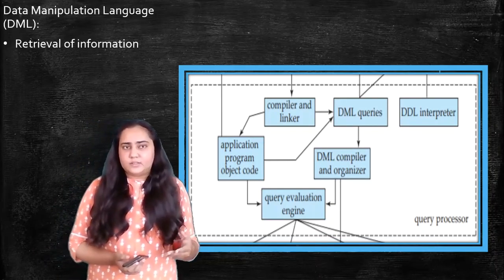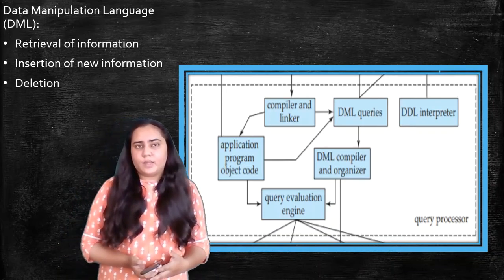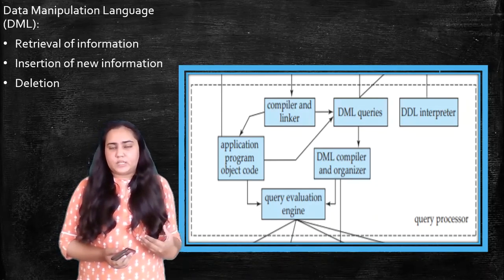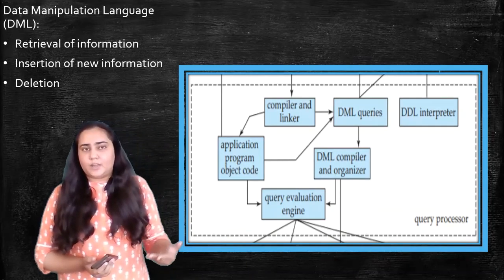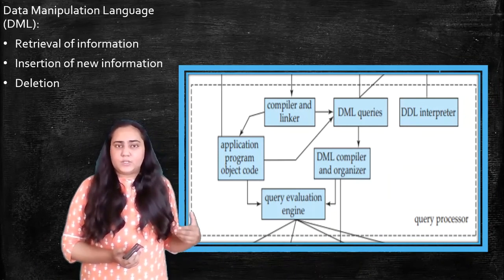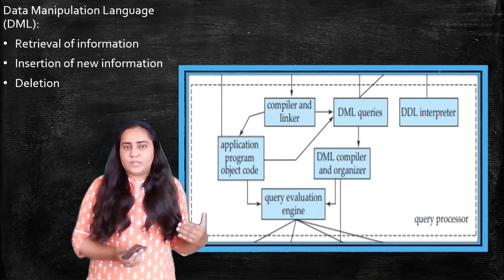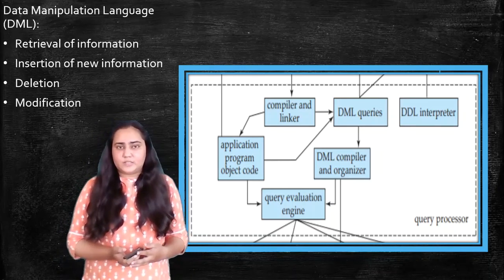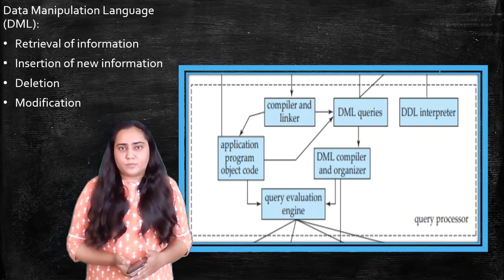DML deals with retrieval of information, with insertion of new information, and with deletion. Retrieval of information means you want to access some data from the database, you just want to read it, you don't want to do anything to it. That is called retrieval, and this is done using a data manipulation language. Then there's insertion, which means you want to insert some new information into the database. This is also done using DML. If you want to delete something from the database, that too is done using DML. And finally, if you want to modify something that is present in the database, you can do that using data manipulation language.